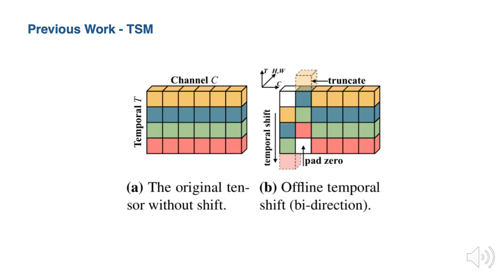In the temporal shift module, it performs efficient temporal modeling by moving the feature map along the temporal dimension. It is computationally free on top of 2D convolutions, yet achieves strong temporal modeling ability. In our work, we use the bi-directional TSM module to mingle both the past and future frames with the current frame.